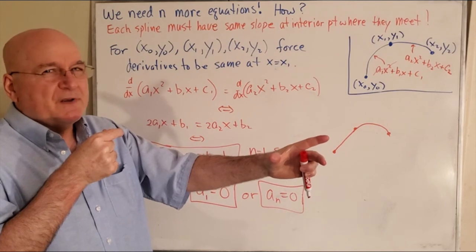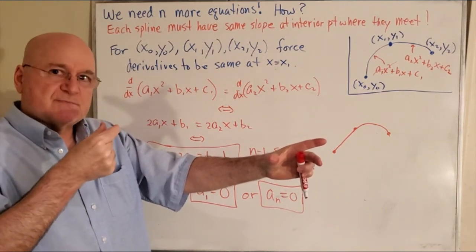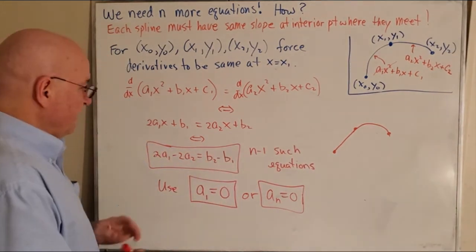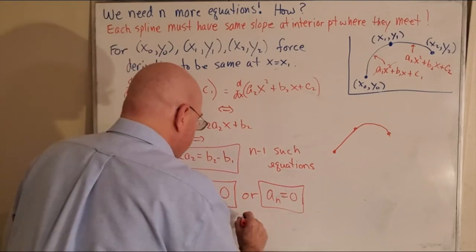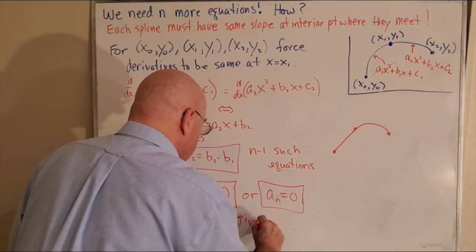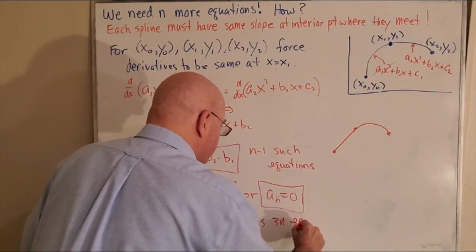If this one's really big, we don't want to use it as the line. We'll use the smaller one as the line. So either one of those gives 3n equations.